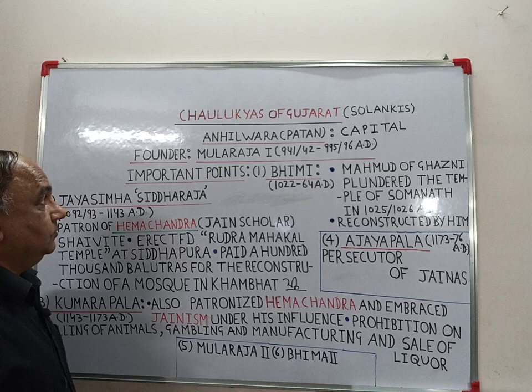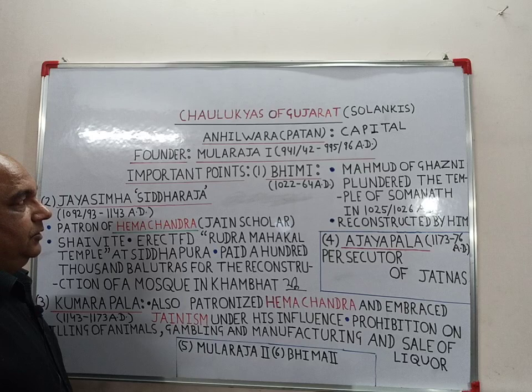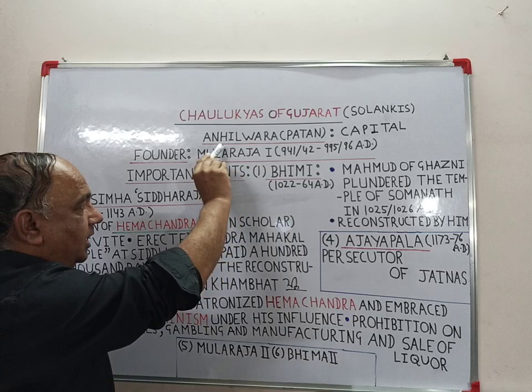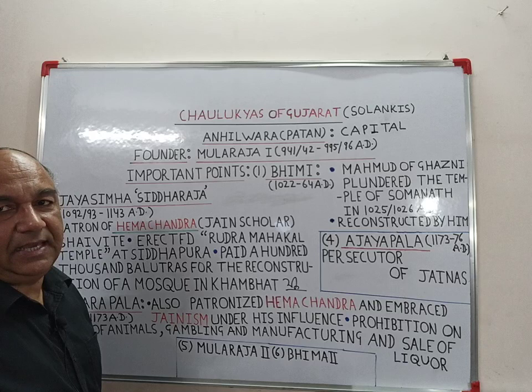This video is on Cholukyas of Gujarat, who are also called Solankis. Anilwada, which is also called Patan, was their capital.